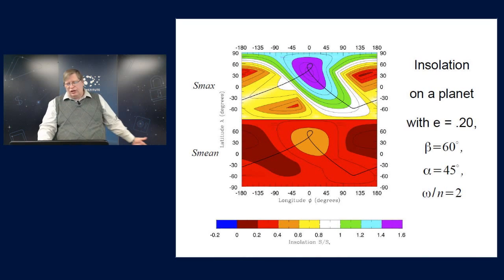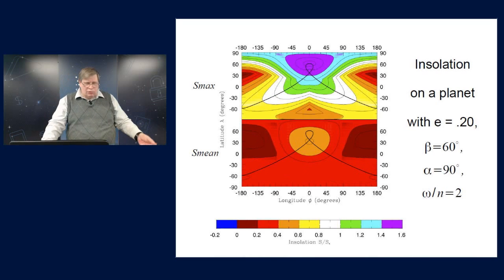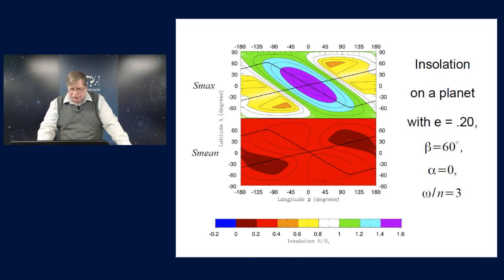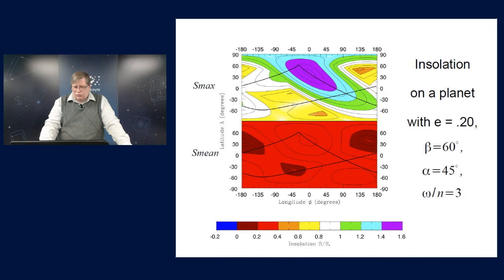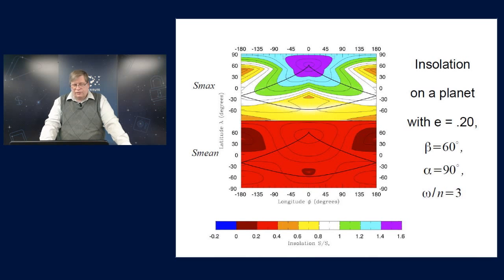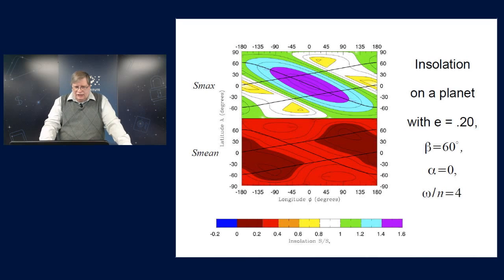Now, the same thing goes for the three-to-one resonance. We're still on the integer-type resonances. Now, the sub-solar ground track wraps around the planet twice per insolation cycle, and that changes with alpha as well. And, just one more here, if we go up to a four-to-one resonance, now the ground track is wrapping around three times, and the insolation is changing accordingly.